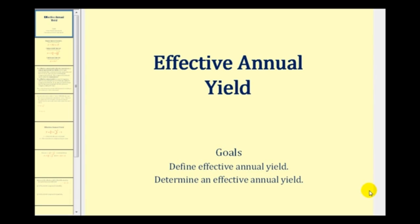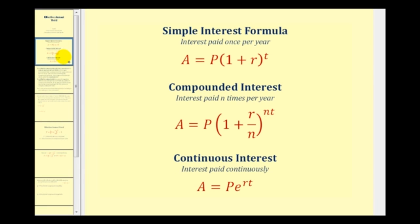Welcome to a lesson on determining effective annual yield. Let's start by reviewing the three different ways that yield or interest can be calculated. The most basic formula is simple interest, where interest is paid once a year. The most common is compounded interest, where the interest is paid a certain number of times per year — in this case, N times per year.